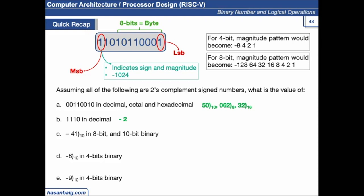For part C, the approach is to assume the number is positive, represent 41 in binary, then take its 2's complement in 8 bits. To extend to 10 bits, you just pad the sign bit. We will be discussing sign extension shortly.